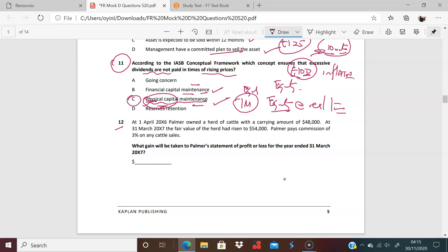So question 12. It says that Palmer owned a herd of cattle for a carrying amount of $48,000 at the year end. It's gone up to $54,000. Whoopee-doo. So what does that mean? It's gone up to $54,000. Remember, we always recognize it straight away, recognize everything to profit or loss. Less commission. So it's paid commission of 3%. So if it's going to pay commission of 3%, I need to deduct 3% off this.